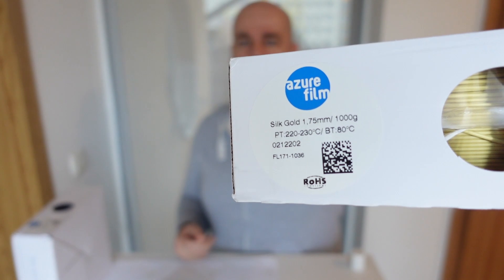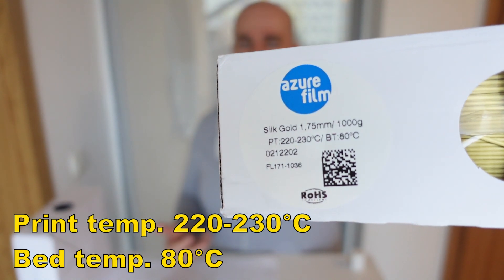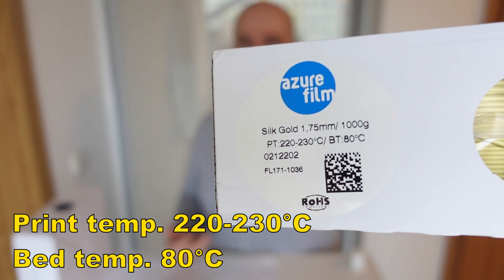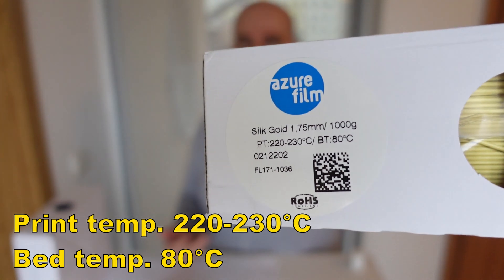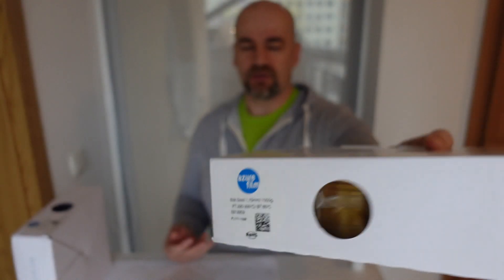On this sticker I can see that here we have higher recommended printing temperatures between 220 and 230 for printing, and 80 degrees Celsius for the bed temperature. These settings are almost for my PETG printing.